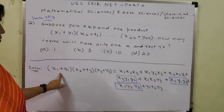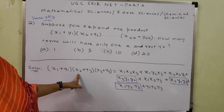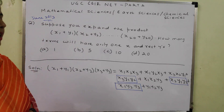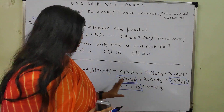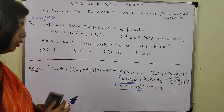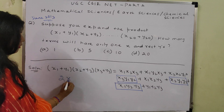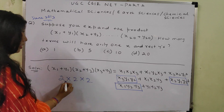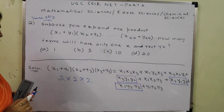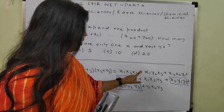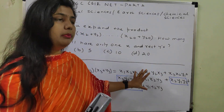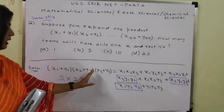To explain this, consider (x1+y1)(x2+y2)(x3+y3). There are 2 terms in each bracket, so in total we know that 2×2×2 = 8 terms should appear after taking the actual product. So total 8 terms after taking the product of these 3 factors.